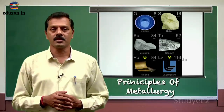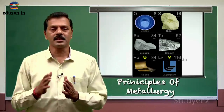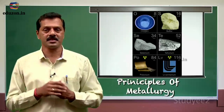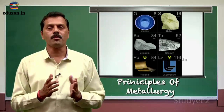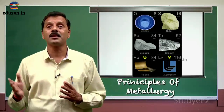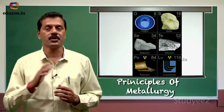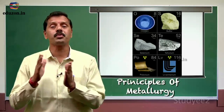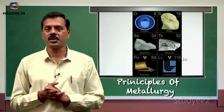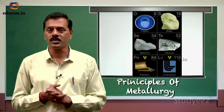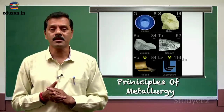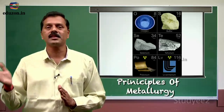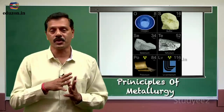The word 'chalcogen' is derived from two words: 'chalco' and 'genus.' Chalco means ores, and genus means producers — that is, ore producers. Majority of the ores contain oxides and sulphides as their impurities.